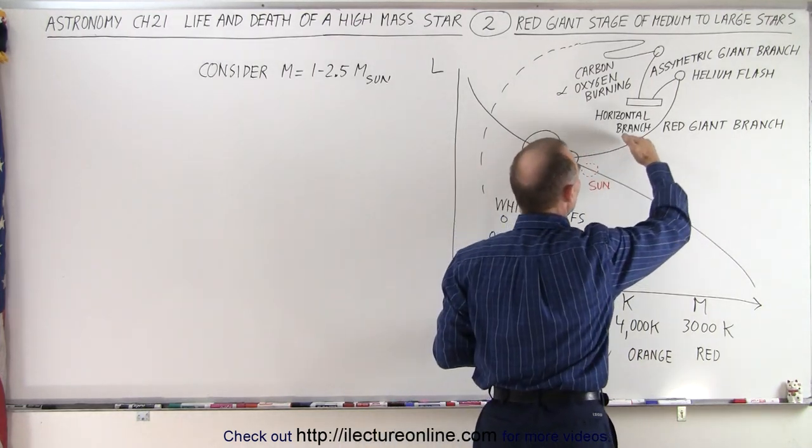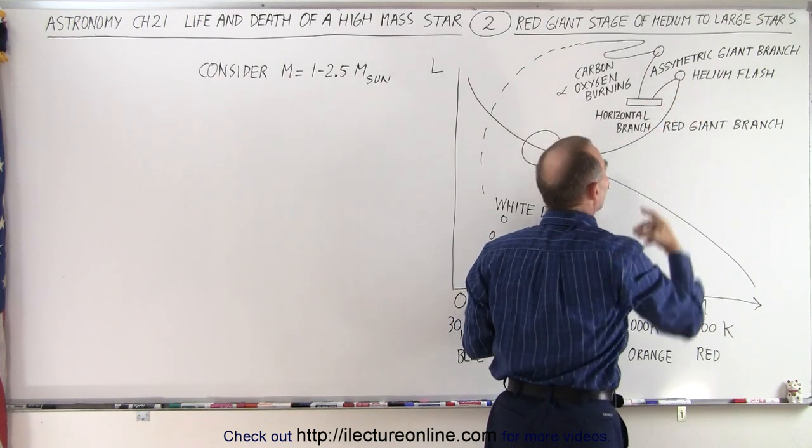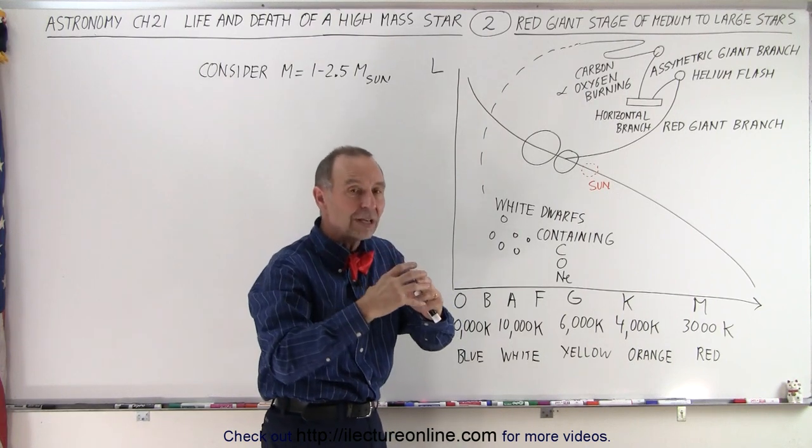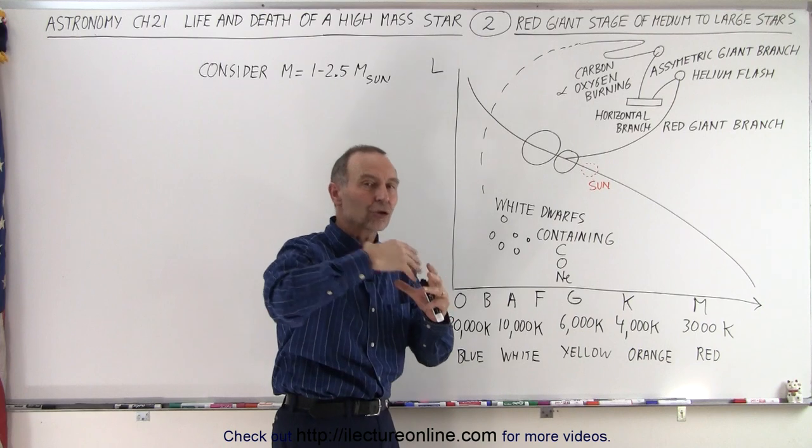That causes the star to become larger and larger, brighter and brighter, and eventually we hit to the point where the helium flash occurs. That's where the temperature inside the core reaches 100 million degrees, and that's enough temperature to begin to convert helium into carbon.